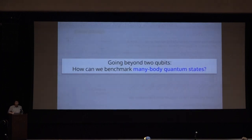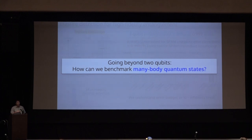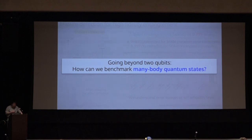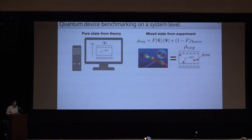So far we've demonstrated fidelities of single-qubit and two-qubit operations. But when it comes to large-scale quantum simulation, we have to work with many-body quantities. When it comes to larger quantum systems, how can we benchmark those highly entangled, large-scale states? I'm talking about quantum device benchmarking on a system level.